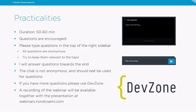Some practicalities for this webinar: it will last approximately 50 to 60 minutes. Questions are encouraged — please type them in the top of the right sidebar. All questions are anonymous. I will answer questions towards the end. The chat at the bottom right is not anonymous, so please do not use it for questions. If your question didn't get a proper answer, please use DevZone where our application engineers are ready to help. A recording will be available at webinars.nordicsemi.com, hopefully tomorrow.